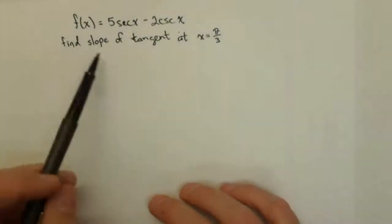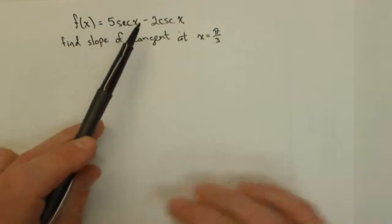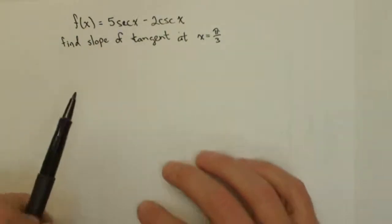In this video, we're going to find the slope of the tangent at π/3 of the function f(x) = 5sec(x) - 2csc(x).